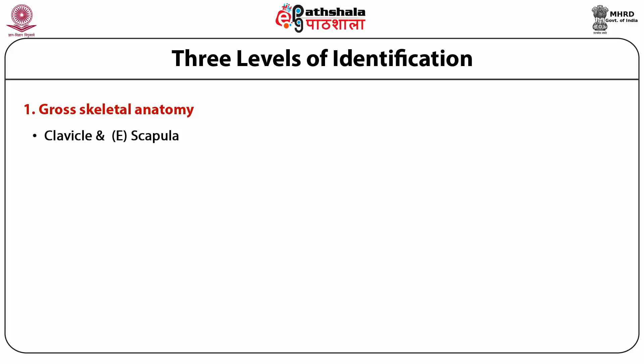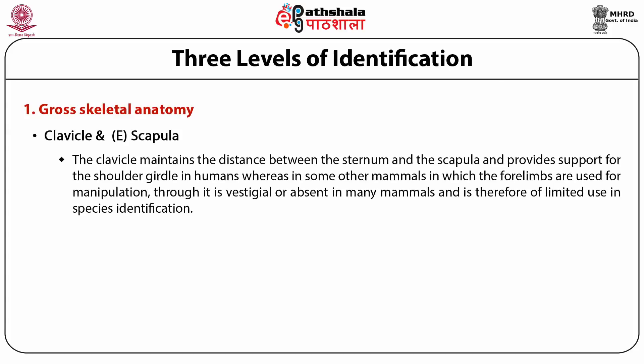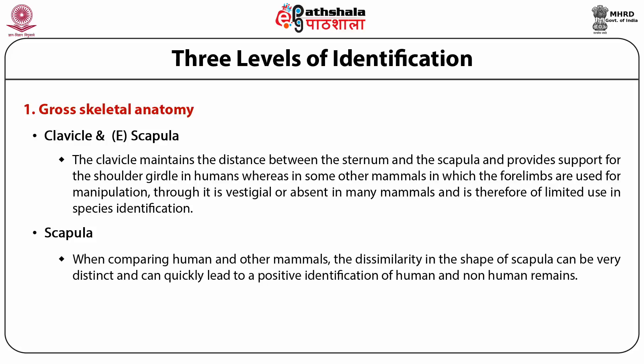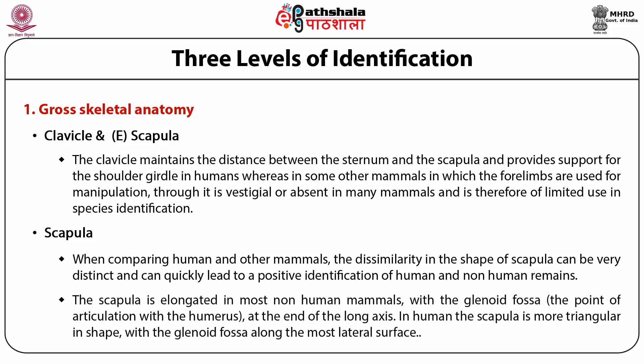The clavicle maintains distance between the sternum and scapula and provides support for the shoulder girdle in humans, whereas it is vestigial or absent in many mammals. Regarding the scapula: when comparing humans and other mammals, dissimilarity in scapula shape can quickly lead to a positive identification. The scapula is elongated in most non-human mammals with the glenoid fossa at the end of the long axis, while in humans the scapula is more triangular with the glenoid fossa along the most lateral surface.